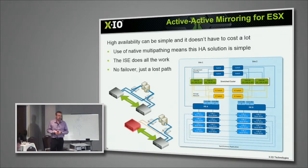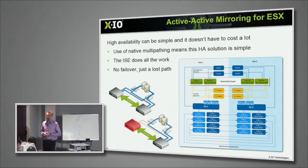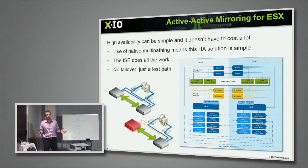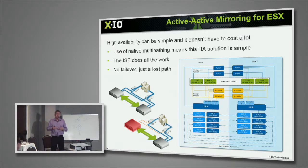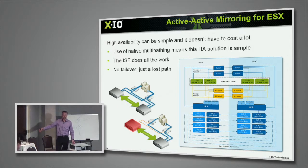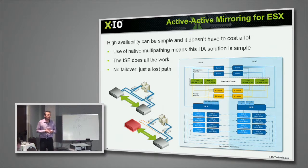This allows you to create a storage cluster with high availability. Should a device fail or a data center fail — because you can also do this across data centers — you now have a full active-active architecture. Not only are the two controllers in one system active-active for that volume, but so is the other one. We use a locking architecture between the two systems that allows them to be fully participant so the volume can be accessed anywhere.